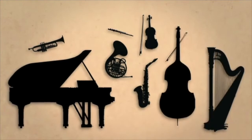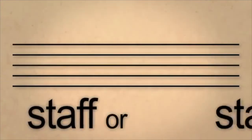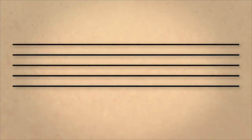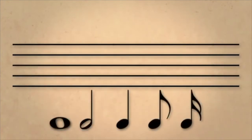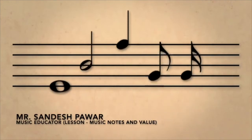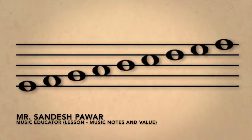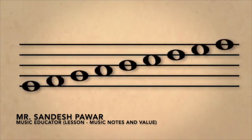We begin with a staff, which has five parallel lines. Any one of our notes can be placed on one of these five lines or four spaces. Let's work with a whole note now.